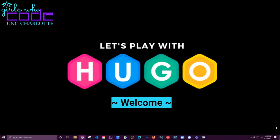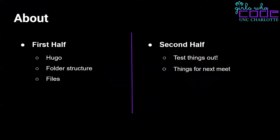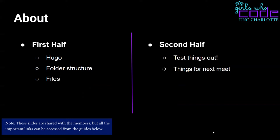We're going to get started. The first half will be talking about Hugo and the folder structure and files in the repo right now. The second half we'll get to test some things out and go over some stuff for the next meeting. I will share these slides after the workshop as well.